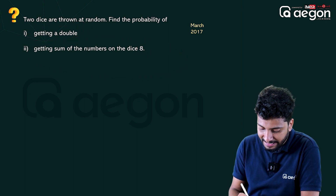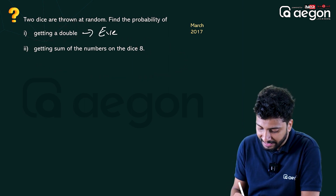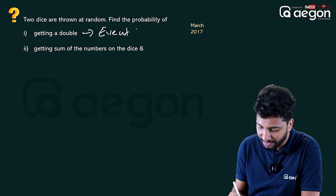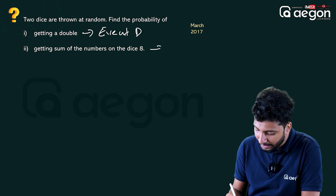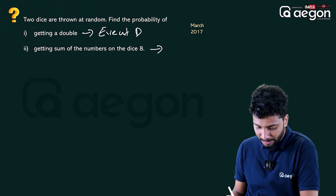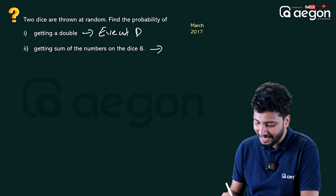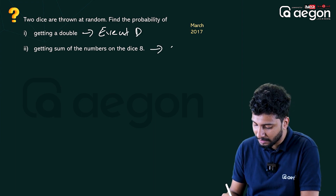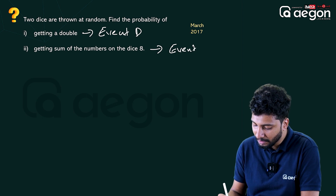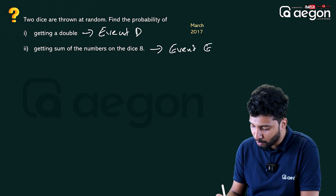This is event D. Some of the numbers on the dice is 8, and the event E.